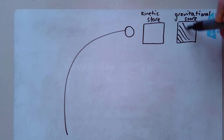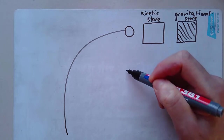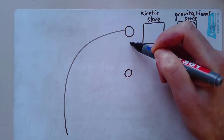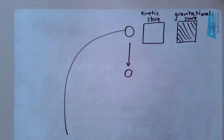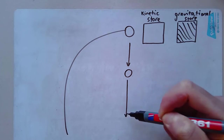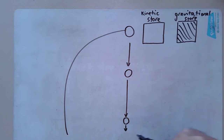Now remember, this is a simplification — it's a bit more complicated than this in reality, but I'm just using it as a simple version to help you understand the concept. Suddenly the apple falls off and it starts to fall down towards the ground. It falls down further and further until it hits the ground.